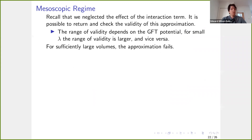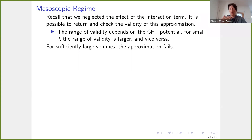In the few minutes remaining, let me talk about the approximations we made. We neglected the effect of the interaction term. Going back to check this, the range of validity depends on the potential in the GFT action: if the coupling constant lambda is small, the range of validity is large; if lambda is very large, the approximation is less reliable. In any case, for sufficiently large volumes the approximation will fail. What 'sufficiently large' means depends on lambda.